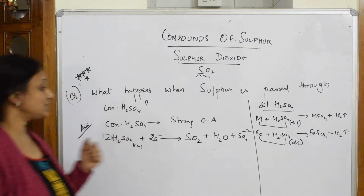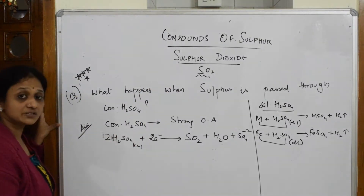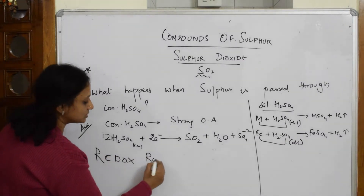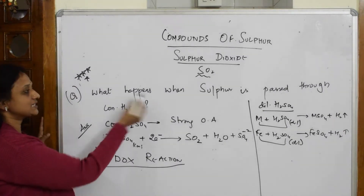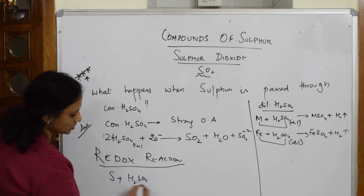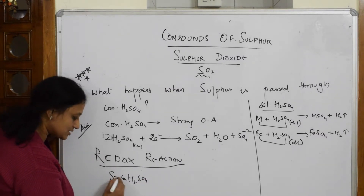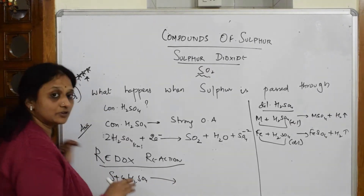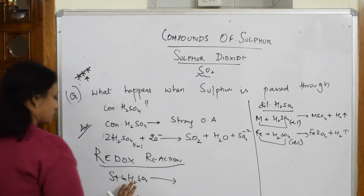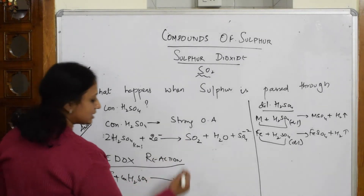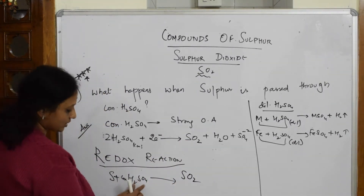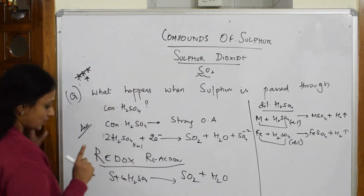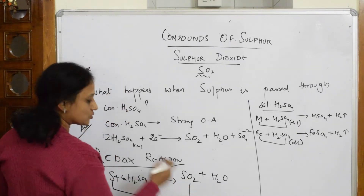Coming back to the question: what happens when sulphur is passed through concentrated sulphuric acid? This reaction is a redox reaction. The concentrated sulphuric acid acts as an oxidizing agent, allowing the sulphur to undergo oxidation. The sulphur gets converted to sulphur dioxide, and the remaining products from sulphuric acid are sulphur dioxide and water.